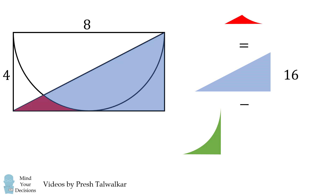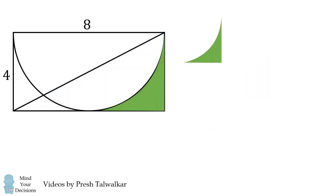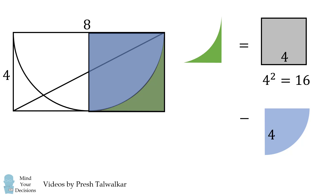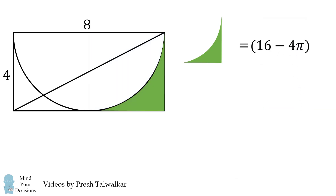So now let's solve for the area of this green shape. The area of this green shape will be the area of this square minus the area of this circular sector. The square has a side length of 4, so its area will be 16. The other shape is a quarter circle with a radius of 4. Its area will be 0.25 multiplied by pi multiplied by 4 squared, which simplifies to be 4π. So this green shape has an area equal to 16 minus 4π.